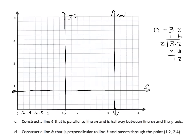Construct a line H that is perpendicular to line T and passes through the point 1 and 2 tenths and 2 and 4 tenths. Let's find that point: 1 and 2 tenths from x, and 2 and 4 tenths for y — right there. Since it has to be perpendicular to T, it will intersect T at a right angle — so it's not a vertical but a horizontal line. We label that H.